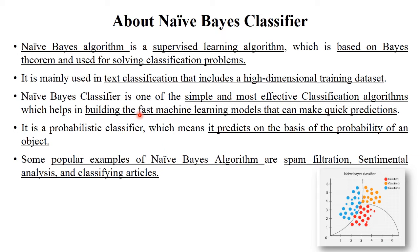Naive Bayes classifier classifies data as per their features. It is one of the most simple and most effective classification algorithms, which is why it is one of the most important algorithms in supervised learning techniques. Naive Bayes classification helps to build fast machine learning models and to predict data in the easiest and fastest way.